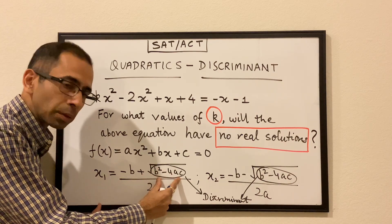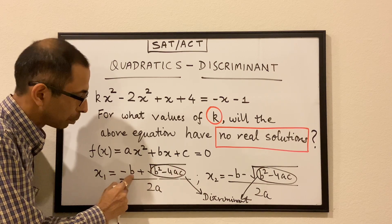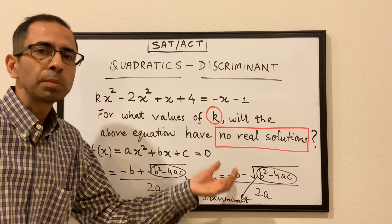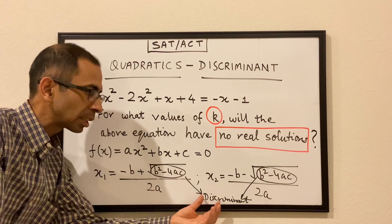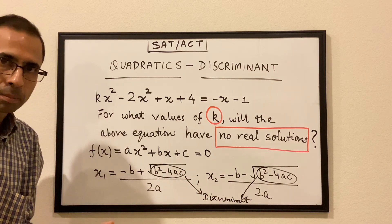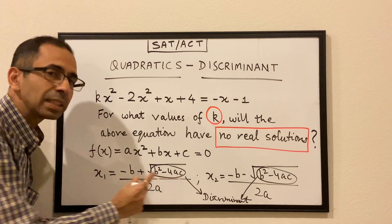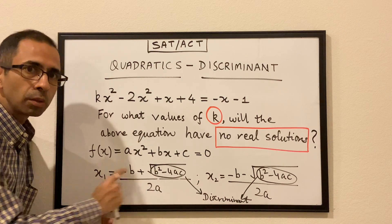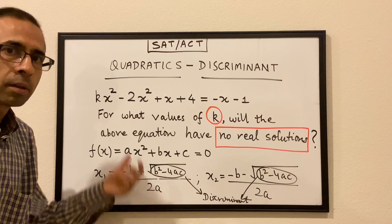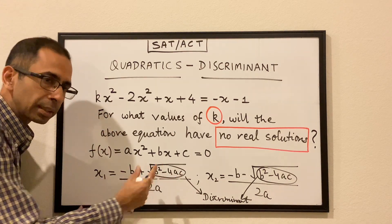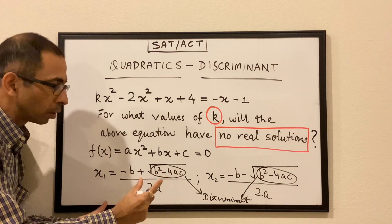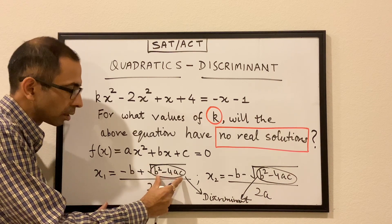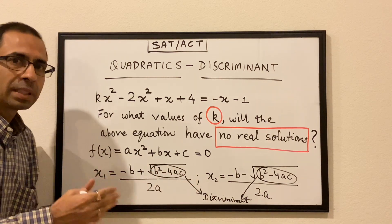When b squared minus 4ac equals 0, the square root of 0 is 0, so both solutions become minus b divided by 2a — the two solutions will be the same. When b squared minus 4ac is greater than 0, we will have some value of that square root and hence two different real solutions. To summarize: when the discriminant is less than 0, both solutions are imaginary; when equal to 0, both solutions are the same; when greater than 0, the two solutions are distinct real solutions.